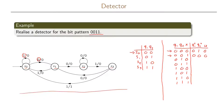Continuing in the truth table: when we are in state S1 and we get a zero as input, we go to state S2, which we have called 10, and we get the output zero.